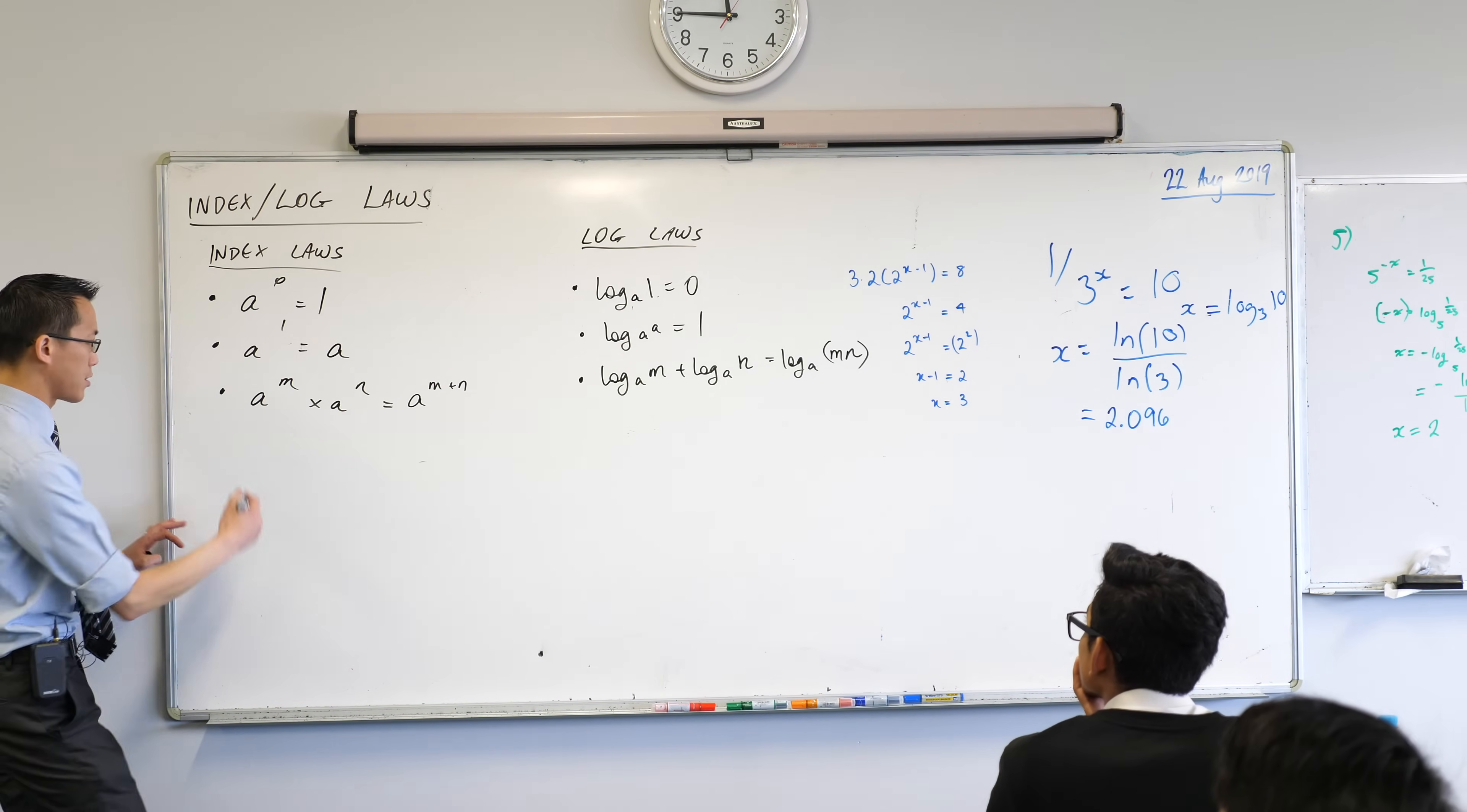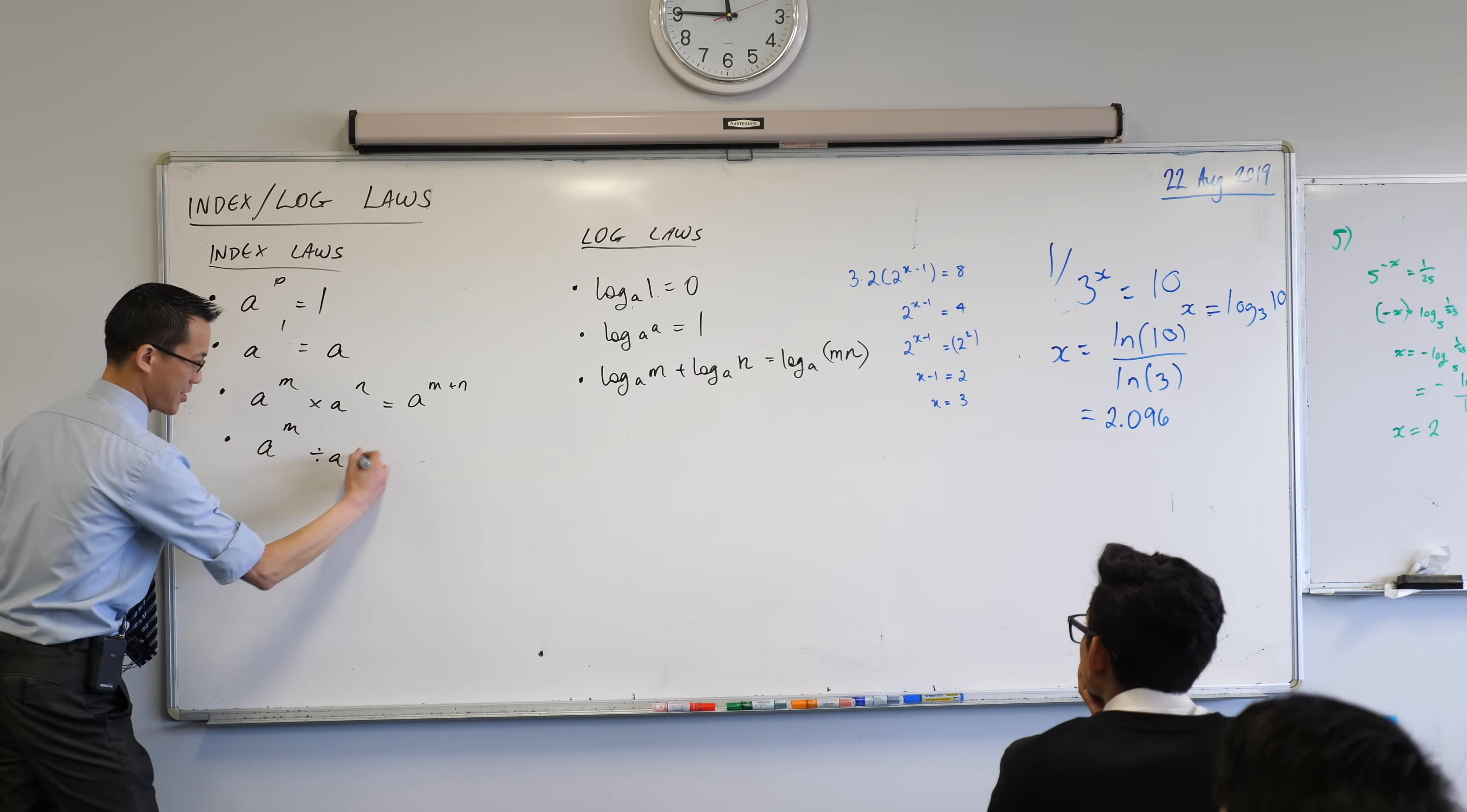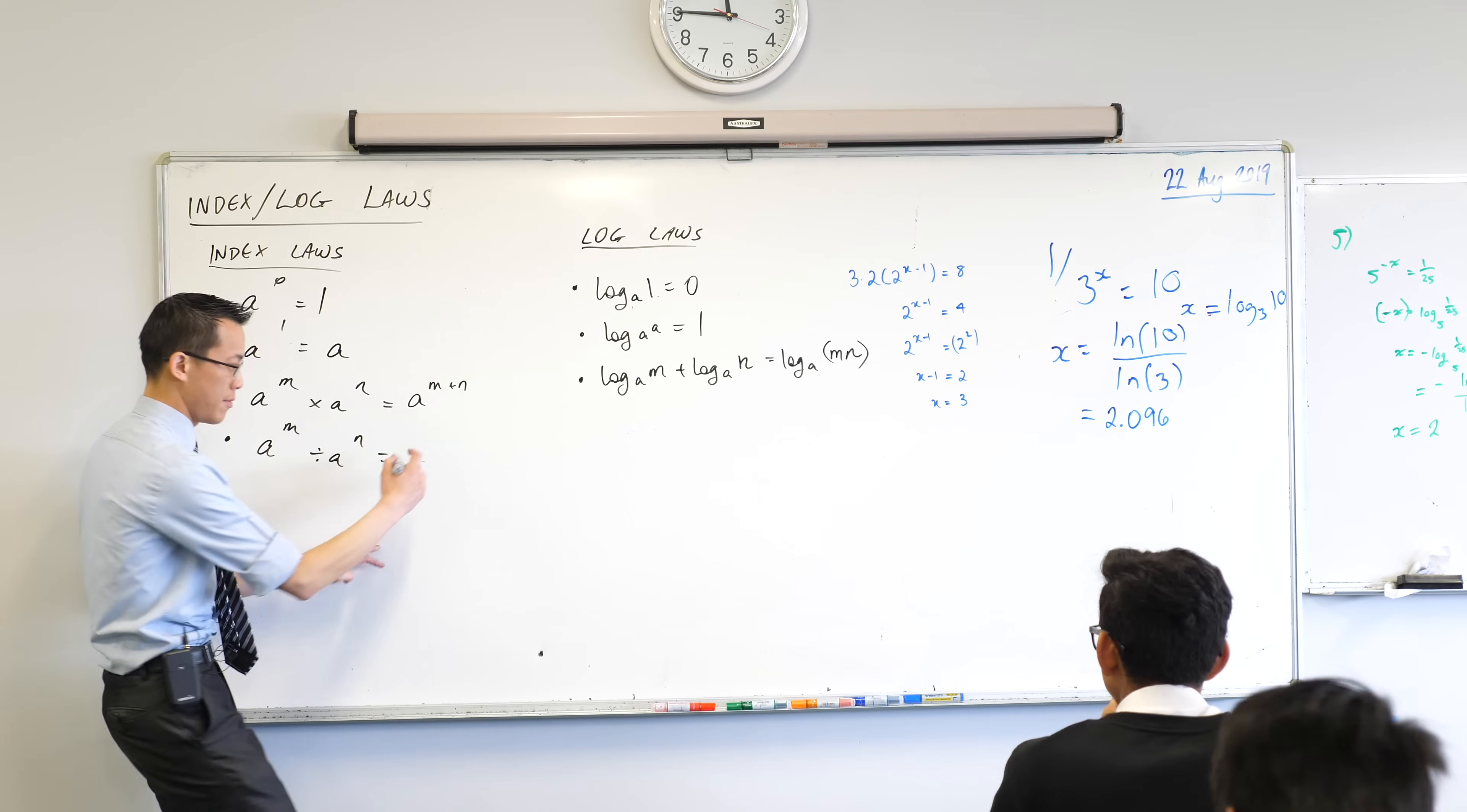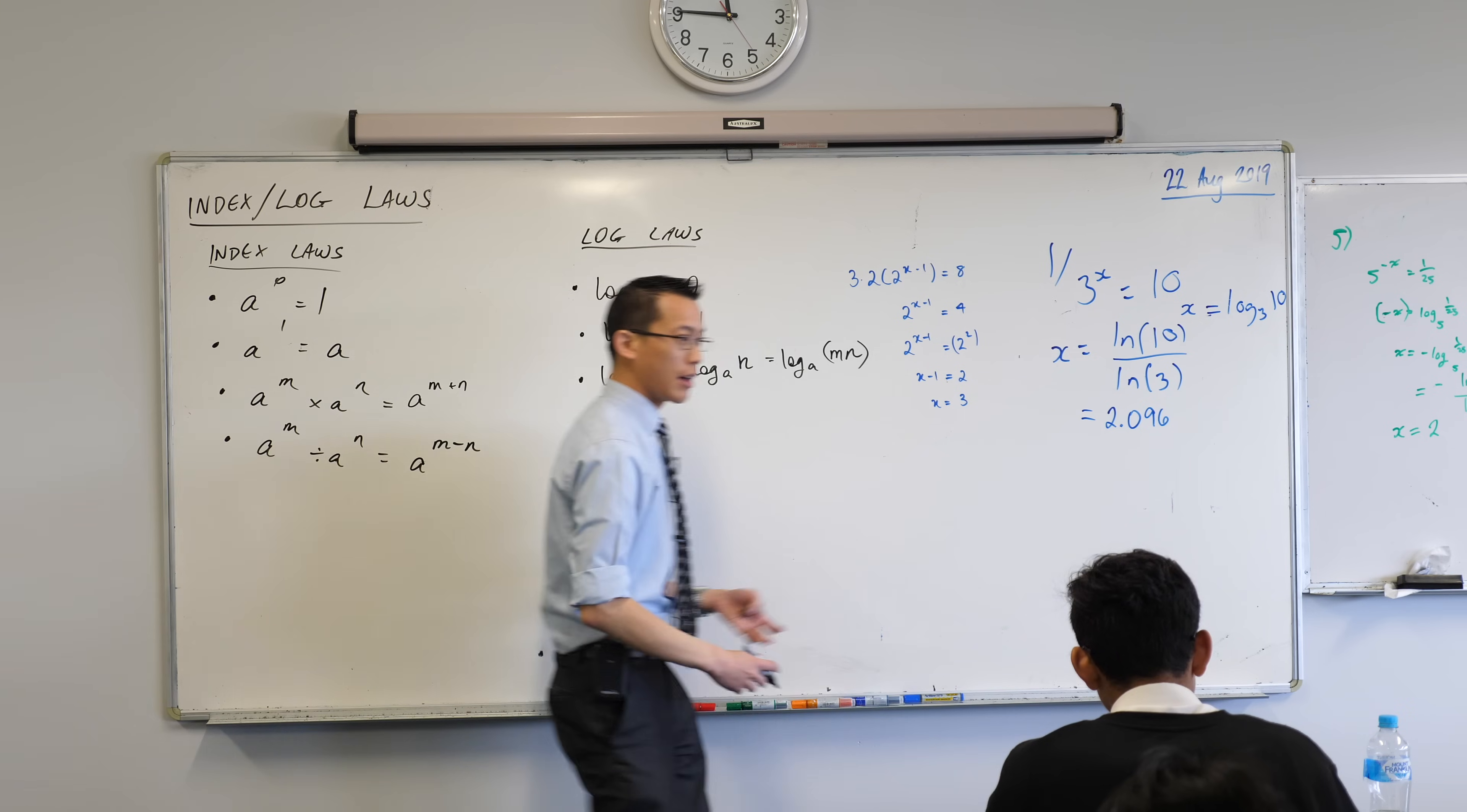We could do this in reverse. So if you didn't multiply, if you say, what's the opposite of multiplication? Division. Very good. What do we do with these indices? What happens? Same thing, but it's negative. So instead of adding them, my indices are going to be subtracted. I minus them.